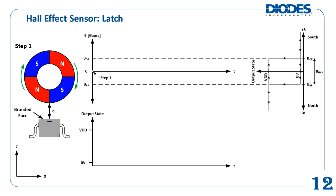A latch Hall Effect sensor turns ON and sets its output to a logic low level with the detection of a sufficiently dense magnetic flux — usually the magnet's south pole approaching the device, which corresponds to a positive magnetic flux density. When the south pole is removed and the detected magnetic flux density decreases, the sensor stays in the ON position; its output is latched to the logic low state. Detecting the opposite pole — in this case the north pole — causes the latch Hall Effect sensor to turn OFF, with its output changing from logic low to logic high. Removing and then reapplying the north pole during this state will not affect the device's output; only the application of the south pole will turn the device ON again.